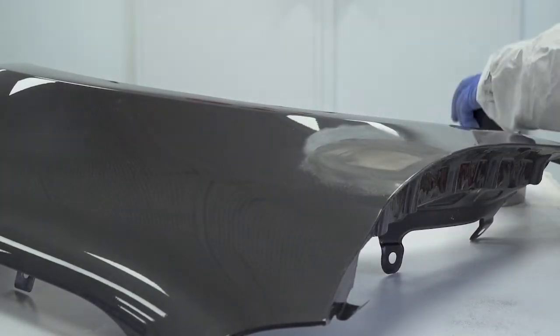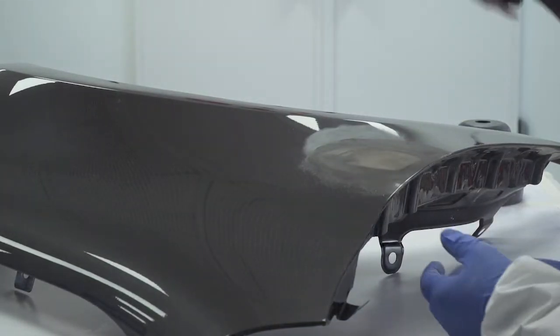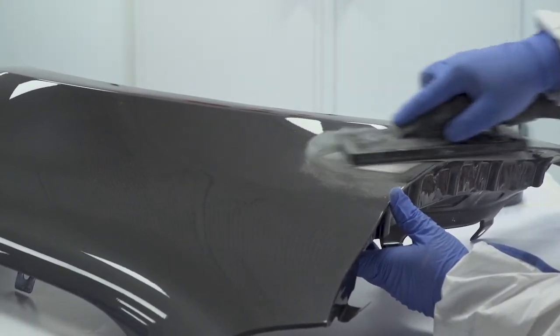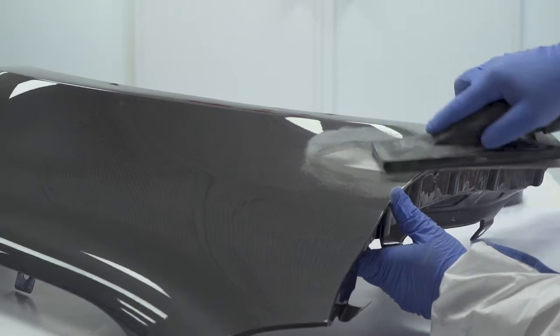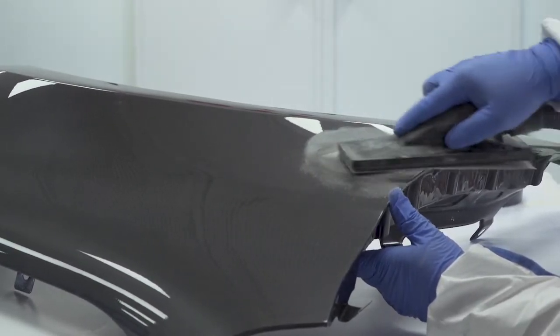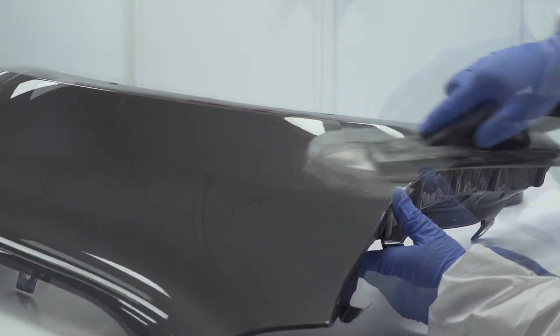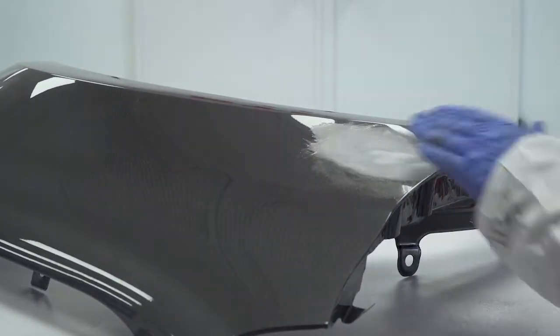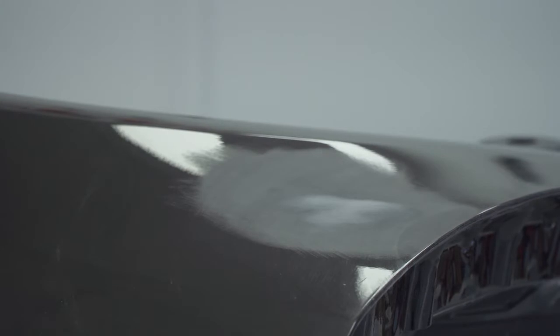Once dry, apply dry guide coat to the repair area to highlight any imperfections or areas that will require extra attention when sanding. Use a dust extraction block with a P180 strip to sand the repair to the correct profile. The panel will now be ready for the next stage of repair.